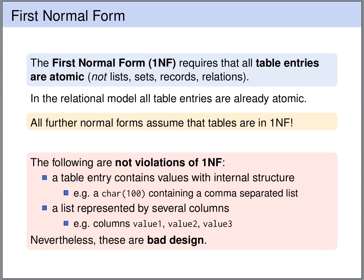It's worth mentioning that the following are not violations of first normal form, but they are still very bad design, so you should still not do these things. For instance, if you have a table value that contains a string, and this string contains a comma-separated list of values — formally this is still an atomic string value and not a violation of first normal form, but storing a list in this form is still very bad design because it's hard to access the particular elements of this list. Also, you can think about storing a list of values by using multiple columns — value 1, value 2, value 3. Formally this is also not a violation of first normal form, since each cell still has an atomic value, but it is still very bad design to store a list in this way.